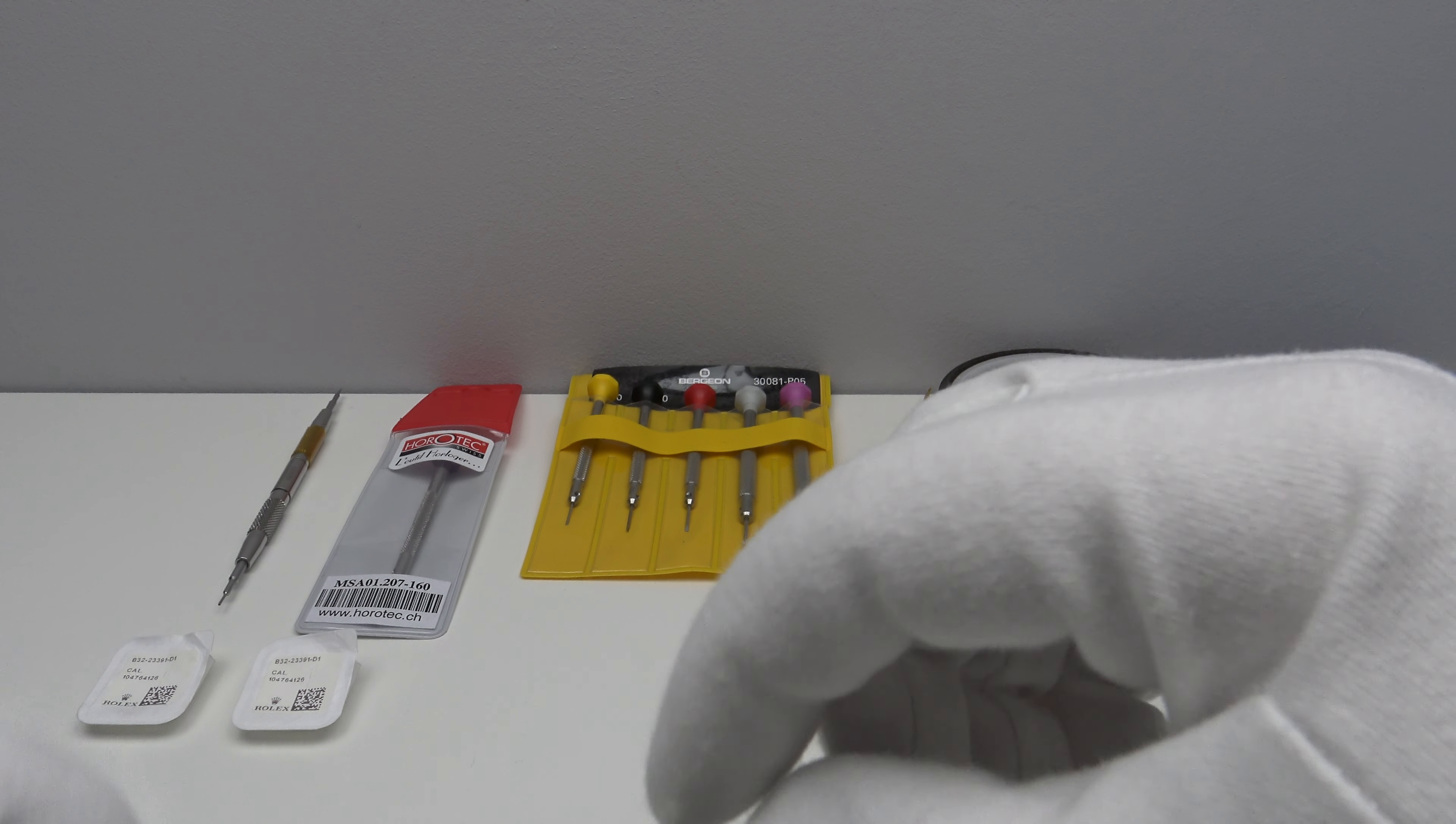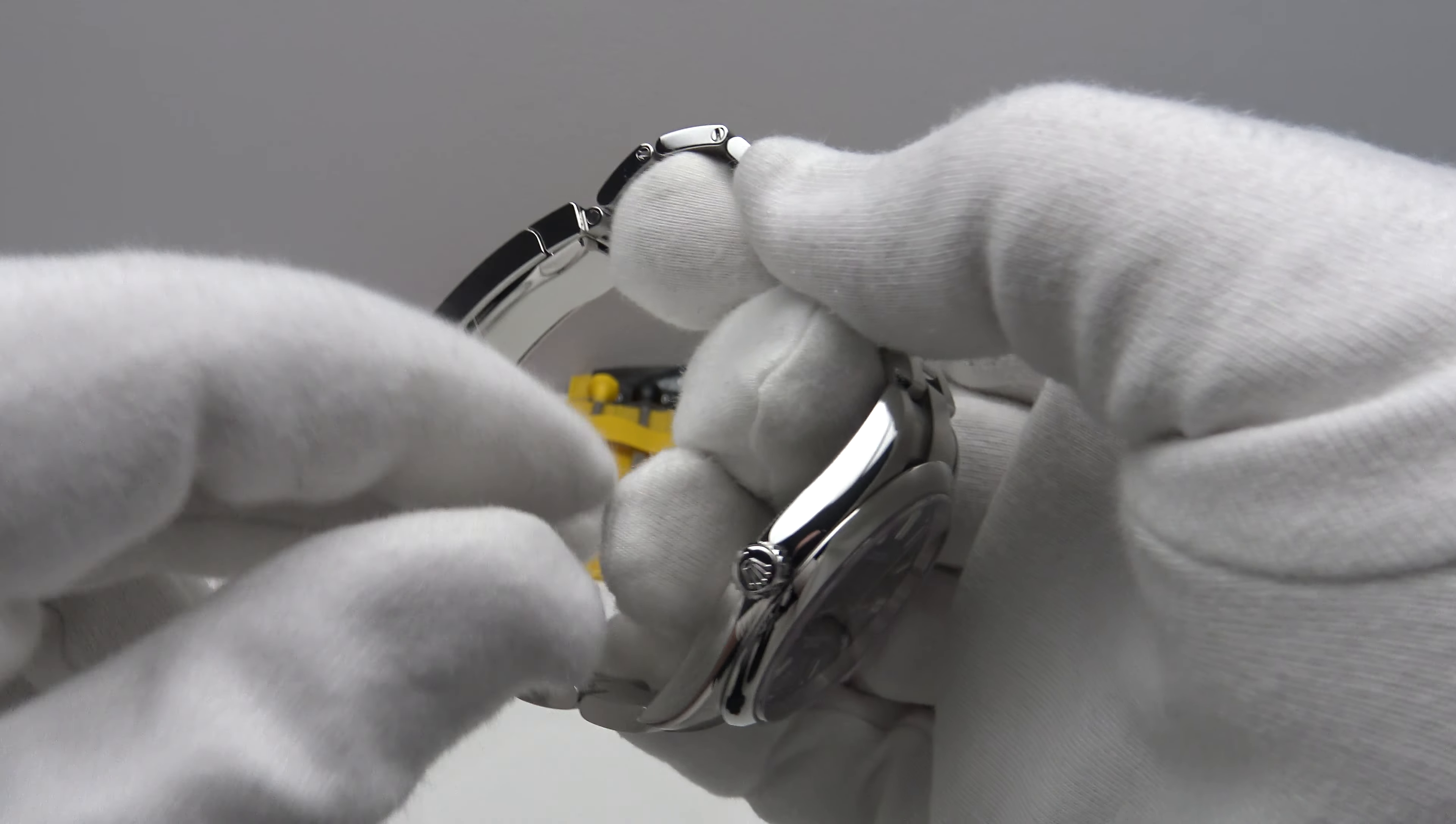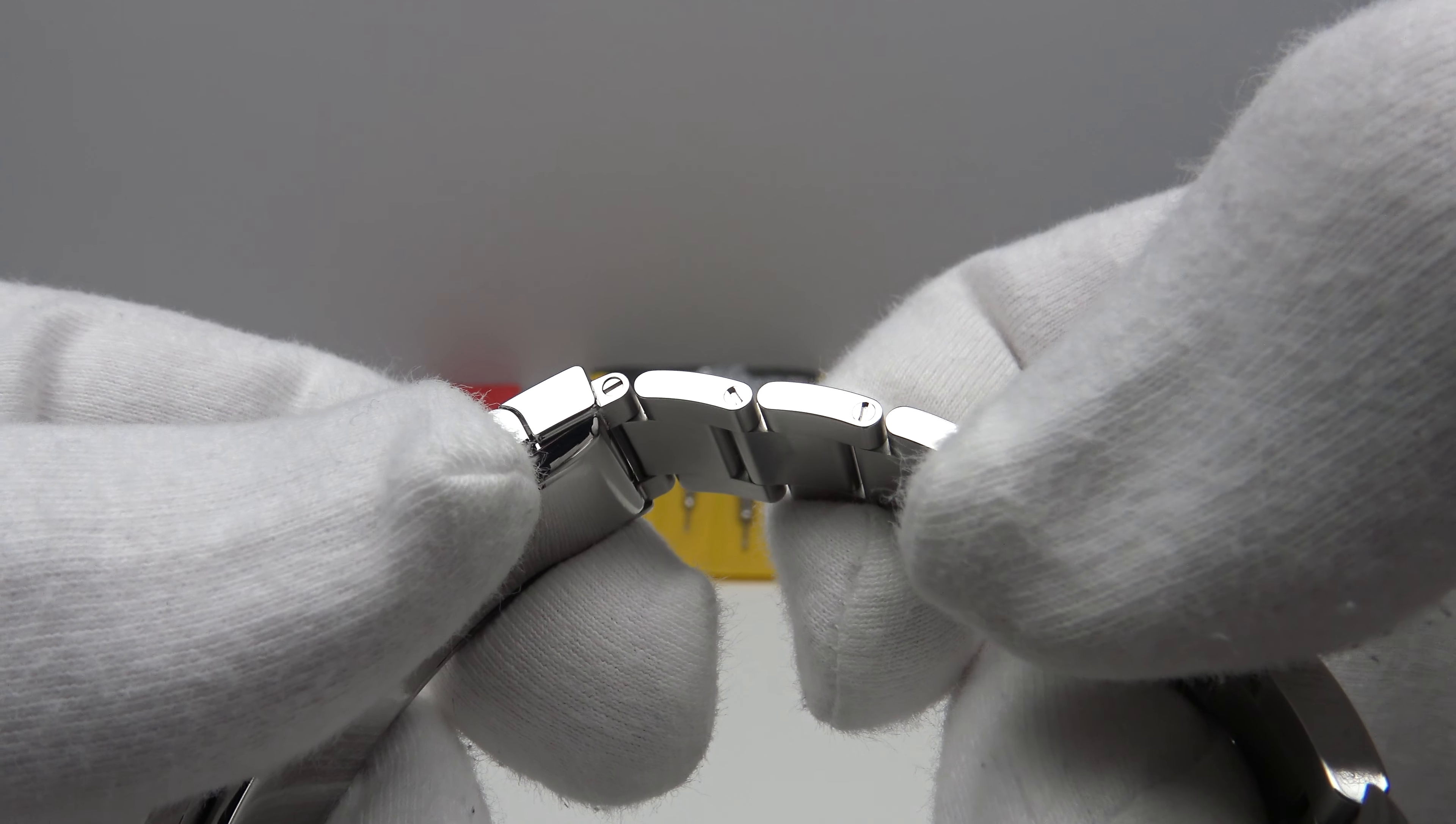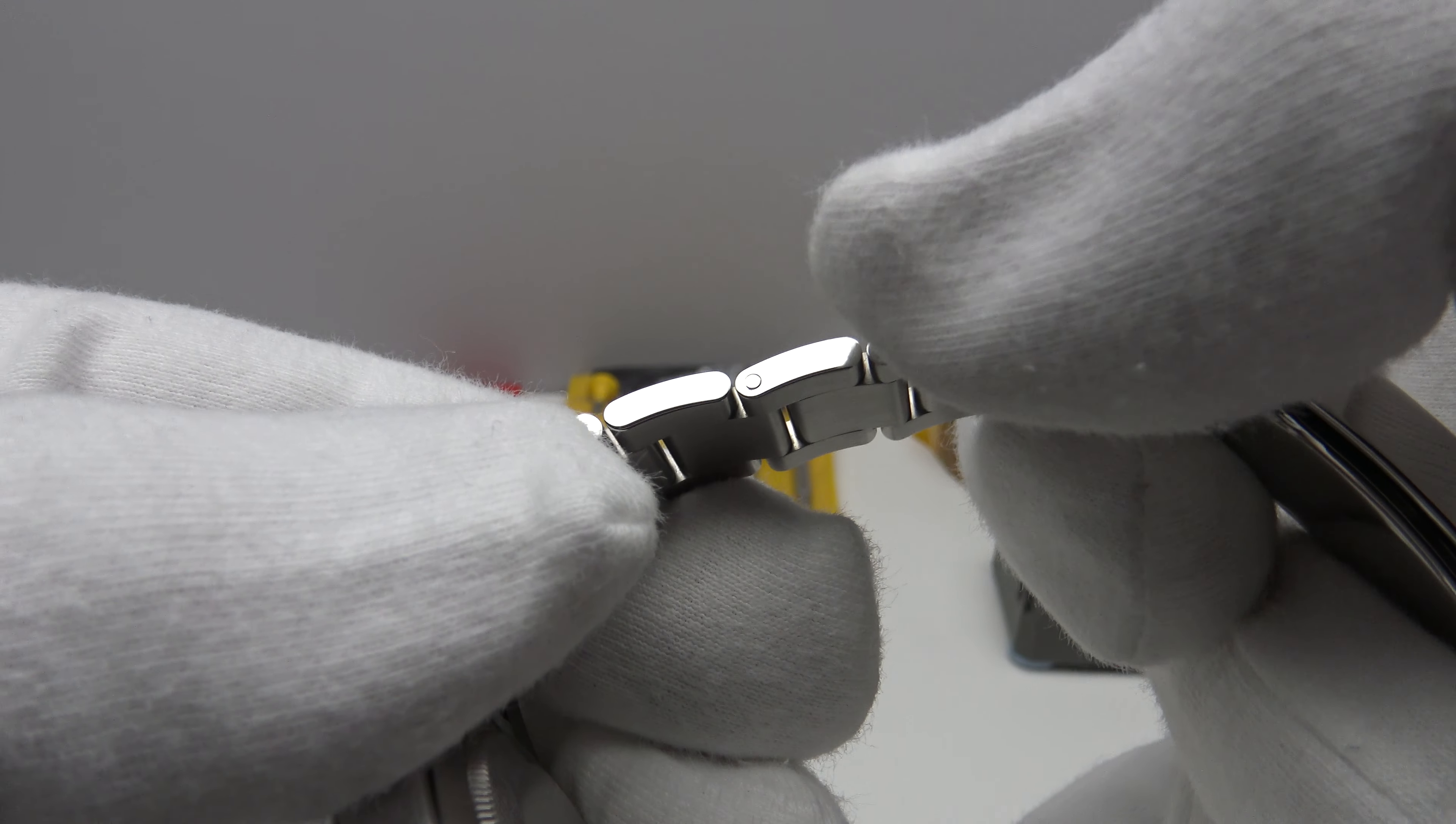So, I put the Kapton polyimide tape over the screw heads in the bracelet and then what I do is I heat up the reverse end. So, just to clarify, one puts the polyimide tape over the slotted screw head on this side of the Oyster bracelet and one heats up the other end, as you can see, with the butane blow torch.